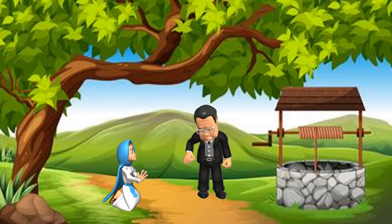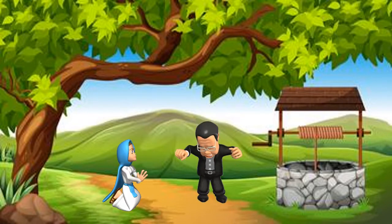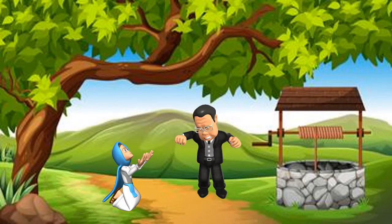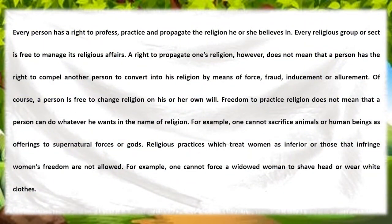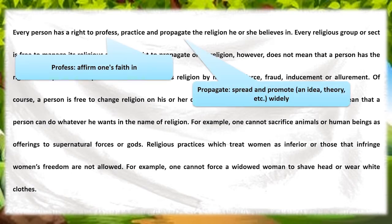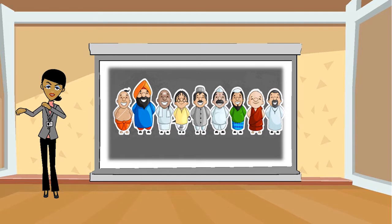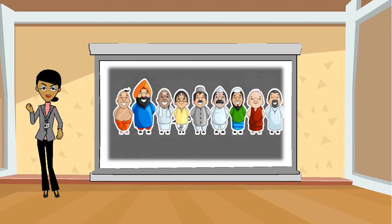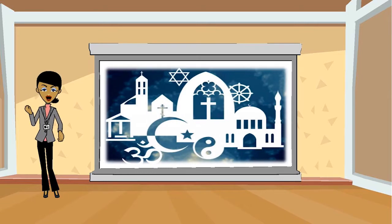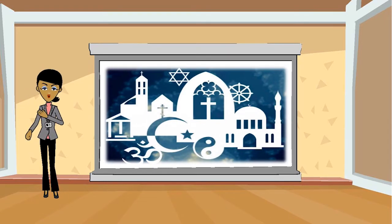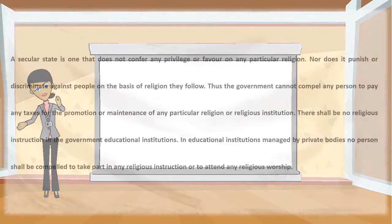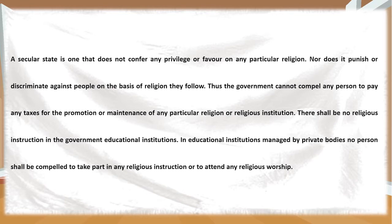Every person is free to change religion on their own wish, but no one can compel another person to convert using fraud or force. No one is free to do anything they want in the name of religion — for example, it is illegal to use animals or human beings for religious purposes. Religious practices that exploit women are prohibited. A secular state does not favour a particular religion. A person cannot be forced to pay taxes for the maintenance of a religious institution, and government educational institutions should not be forced to take part in religious worship or instruction.